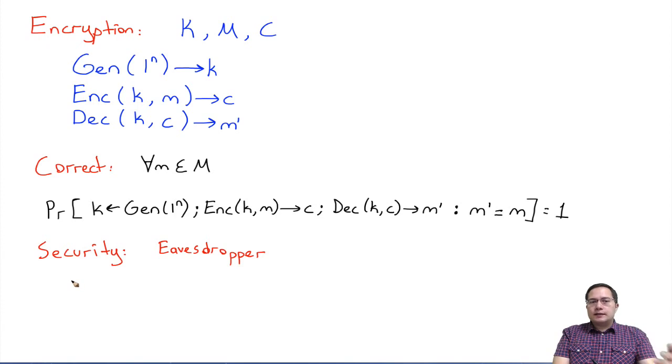First let us define an experiment as a probability. The experiment will be as follows. We are going to generate a key again using this gen function with the security parameter. We are going to generate this key, but remember this key is secret so we are not going to give it to the adversary. What we are going to give to the adversary is the security parameter, so we will let the adversary know the security parameter we are working with.